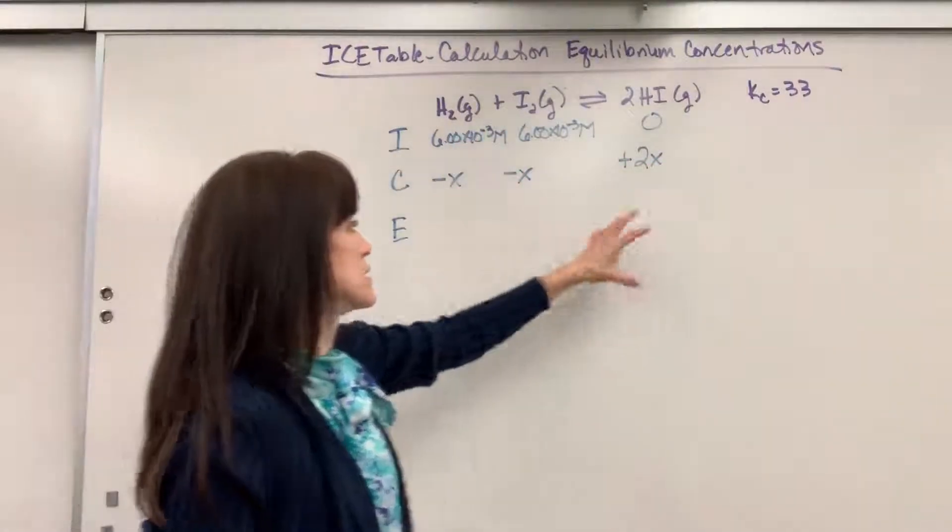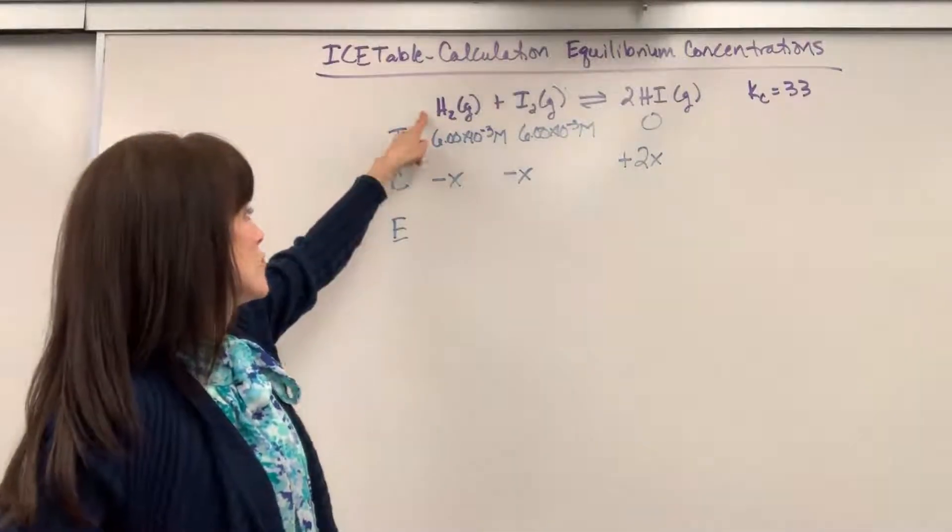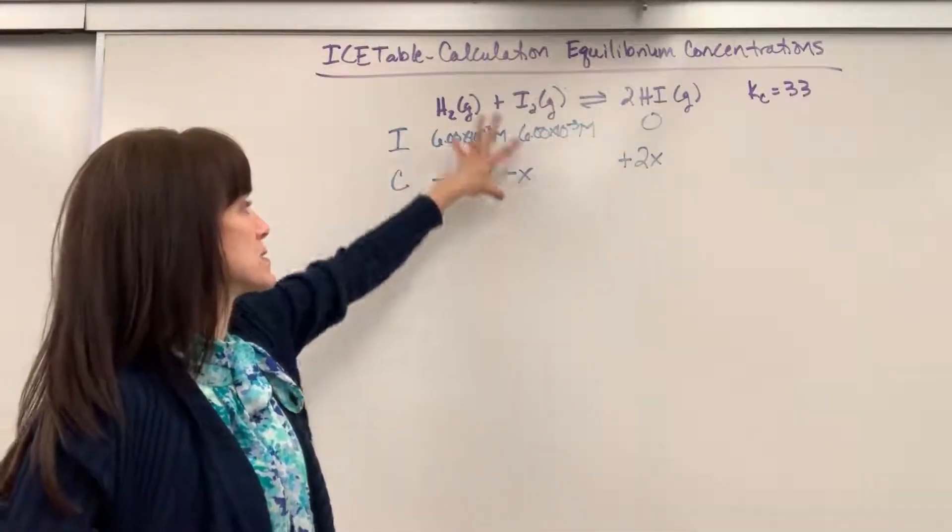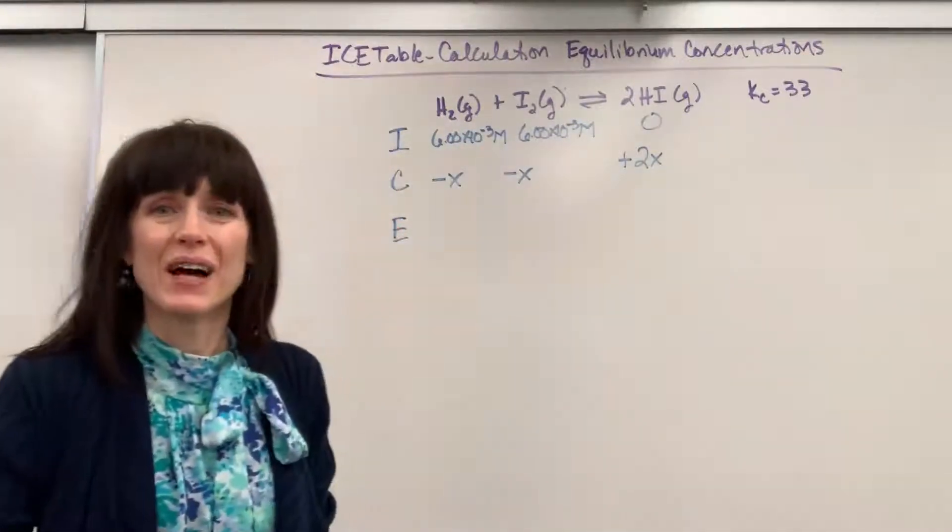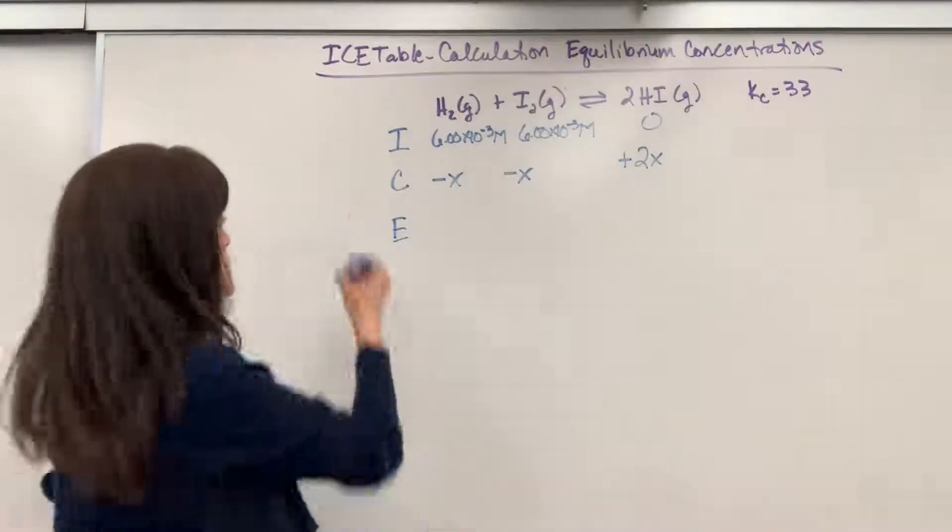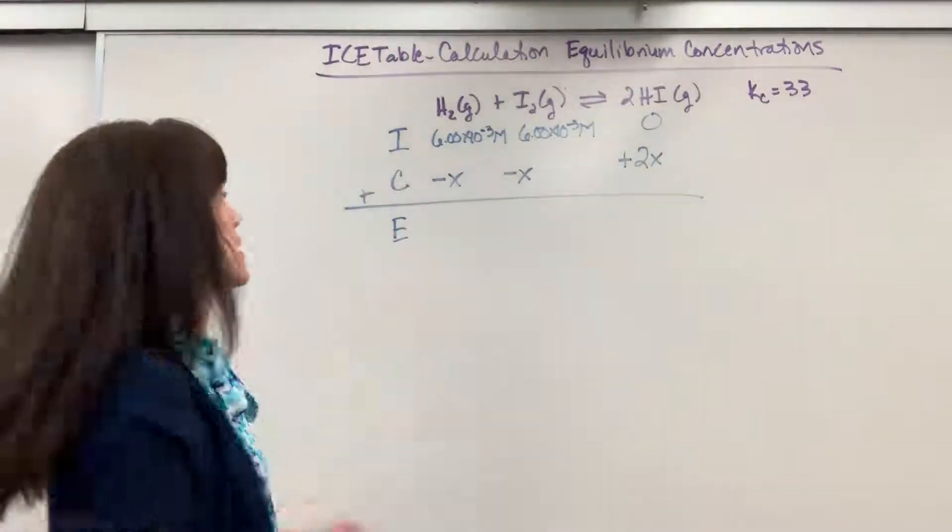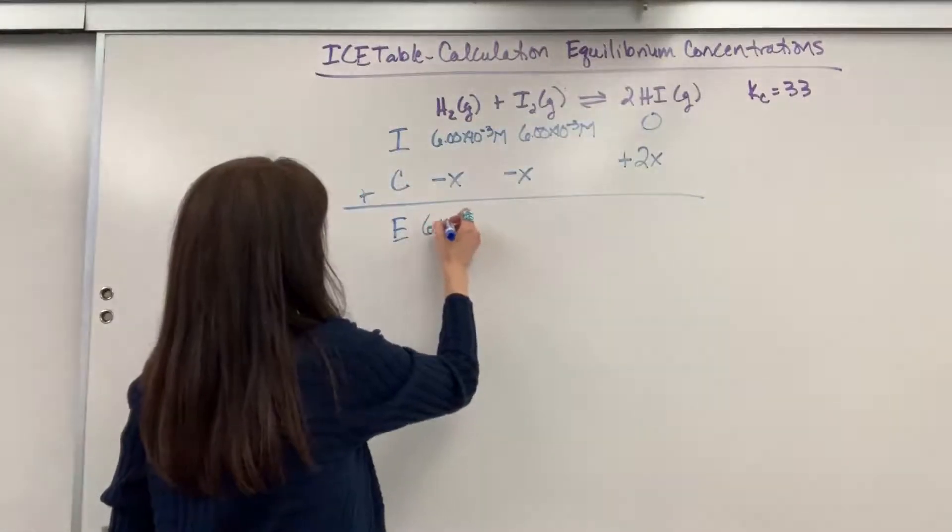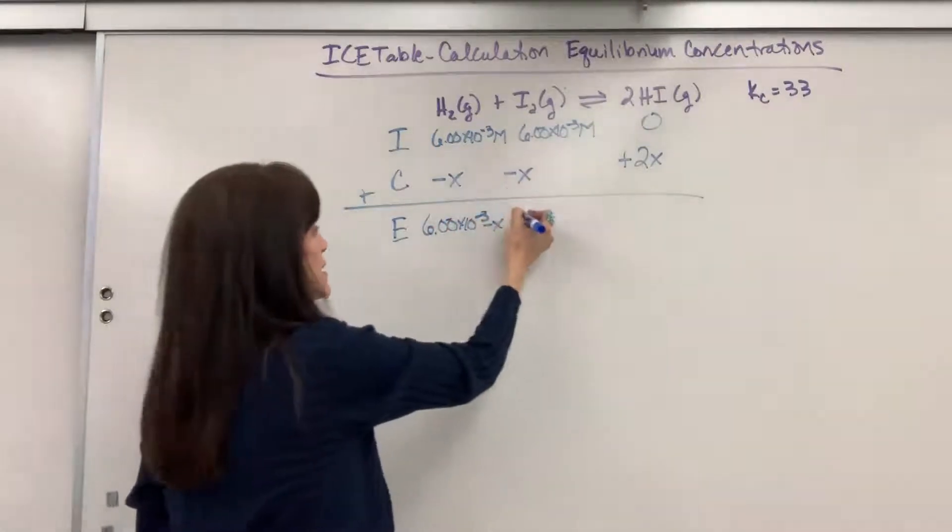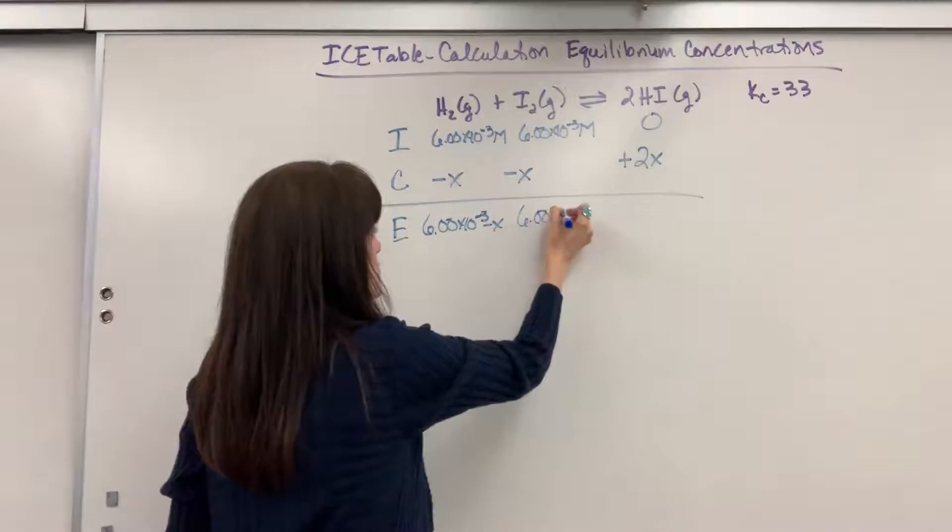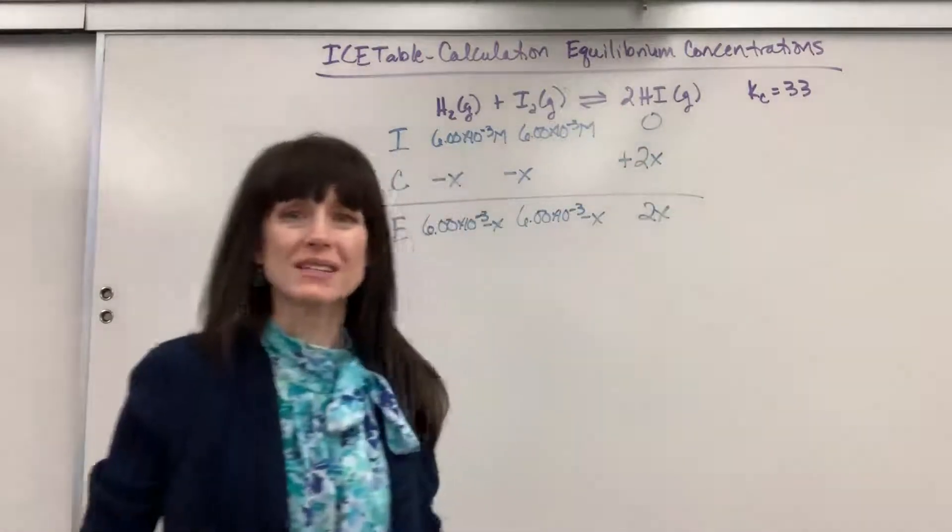hydrogen compared to, we'll react with 1 mole of the iodine to produce 2 moles of the hydrogen iodide. So that's the ratio that we'll lose, 1 to 1 to 2. We will consume reactants and we're going to make products. So again, you just look at those coefficients. Put the coefficient from the X, minus for the reactant because we lose that, positive for the product because we're going to gain it. Then really easy on the E, we just add I plus C. So we will have 6 times 10 to the minus 3 minus X. Same thing here, 6 times 10 to the minus 3 minus X. And 0 plus 2X is just going to be 2X.